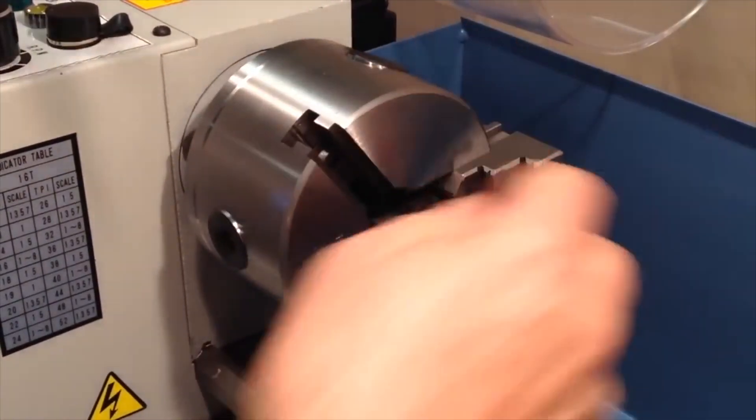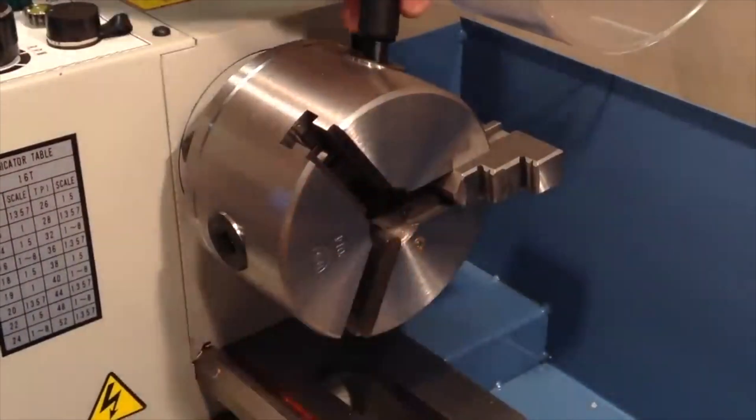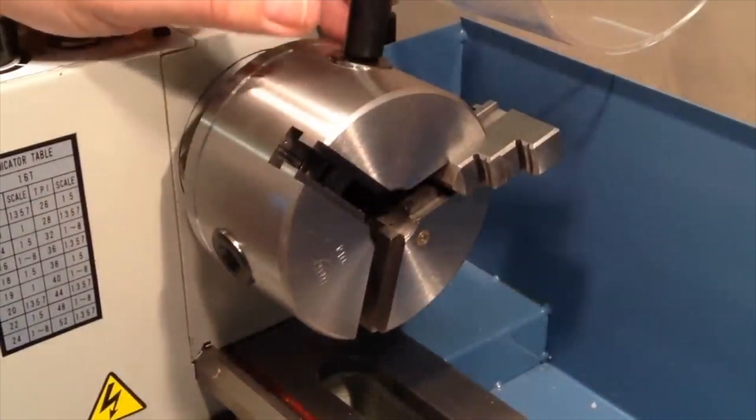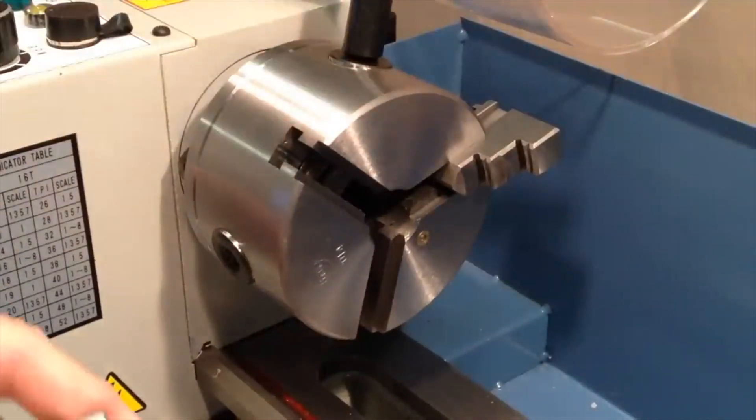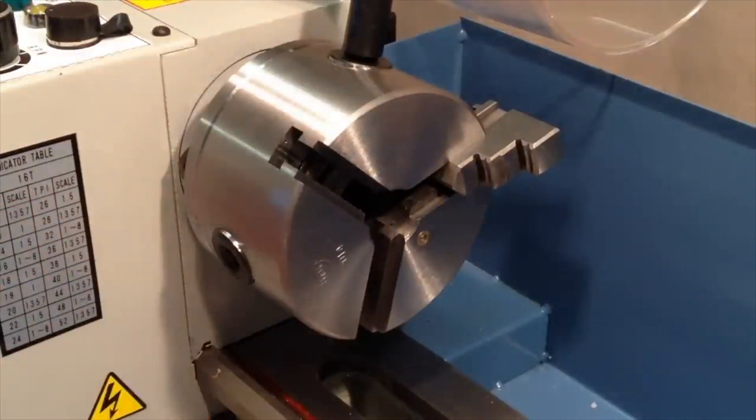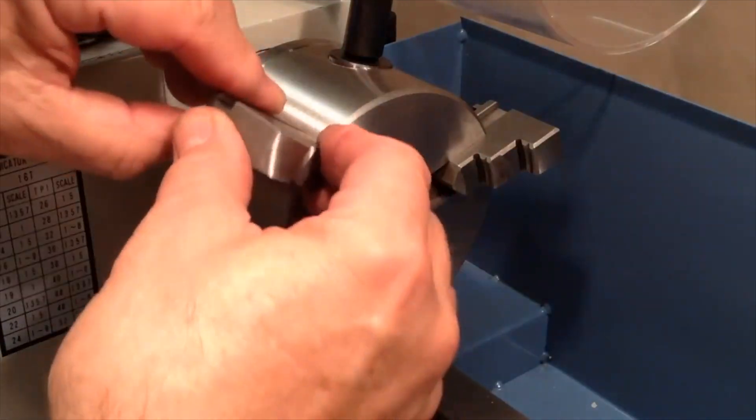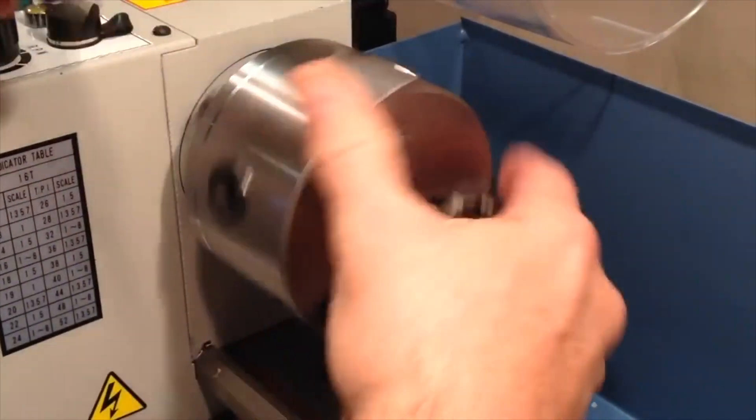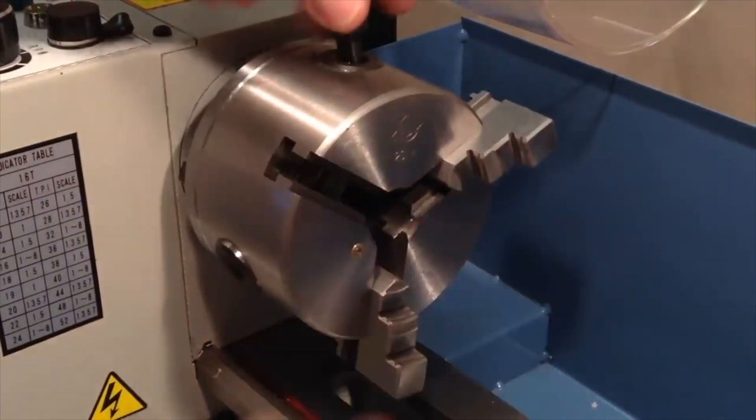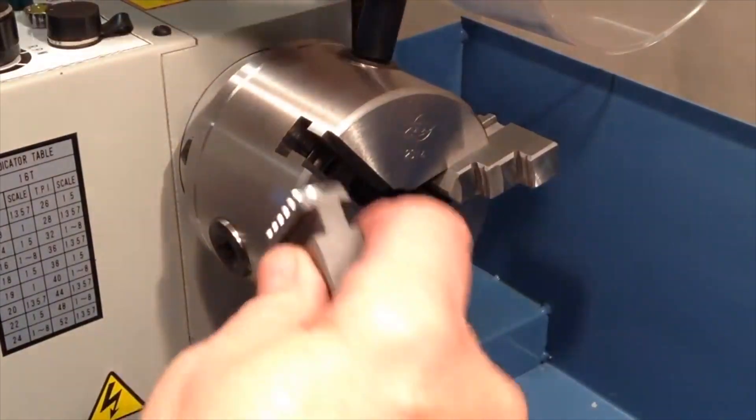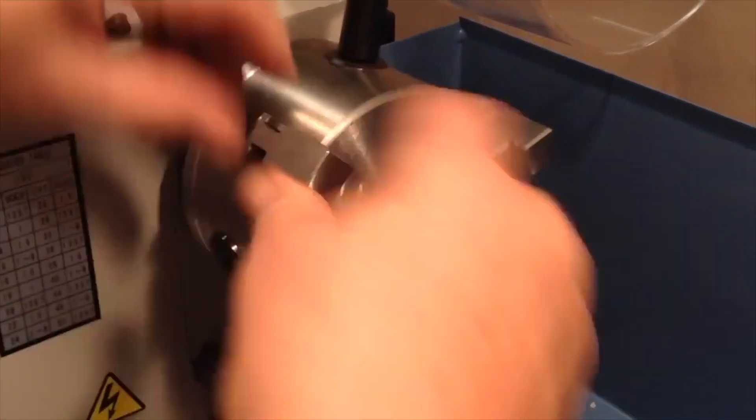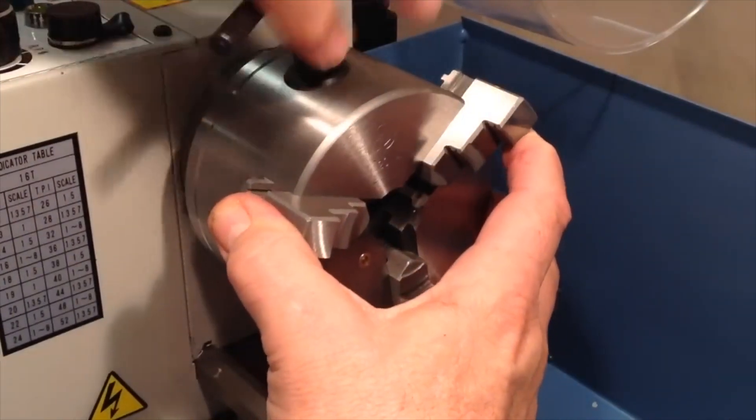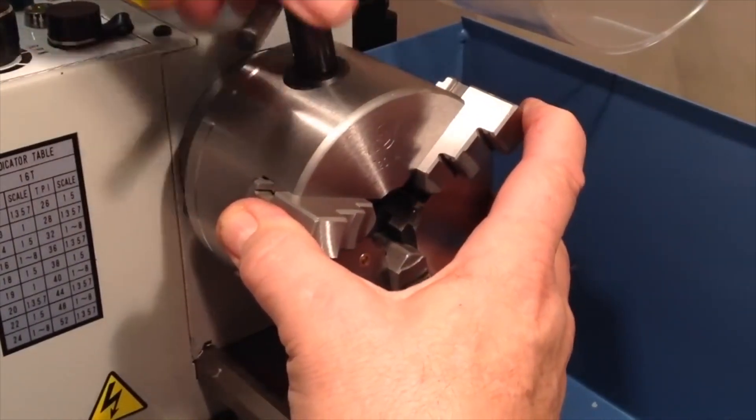Now I turn it to the slot for jaw number two and I find my number two jaw, that's number three, there's my number two jaw. I just repeat that and make sure that one's locked in there. And jaw number three, same thing.